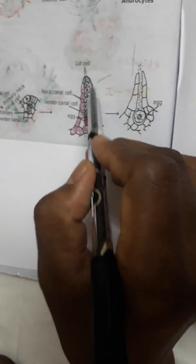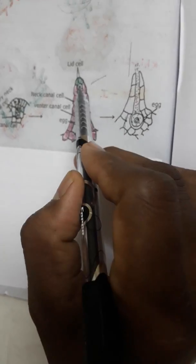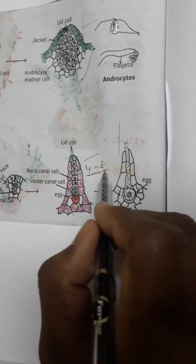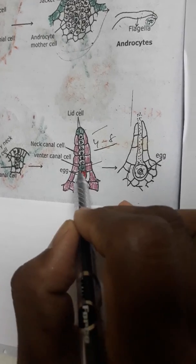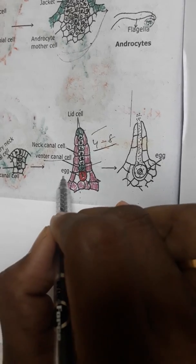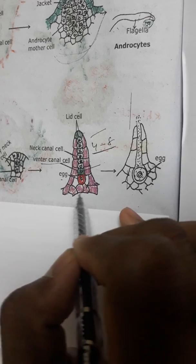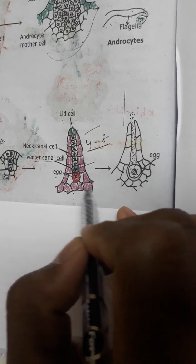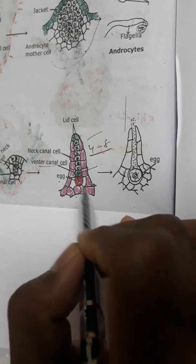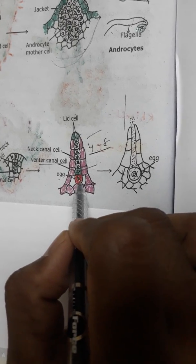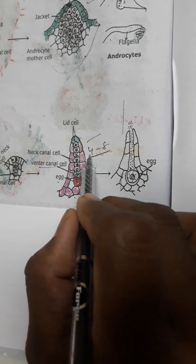The archegonium has jacket. It is the neck, neck jacket. These are the neck canal cells. Nearly four to eight neck canal cells are present. Remember, four to eight neck canal cells, four lid cells, one ventral canal cell, one egg cell. Here, no venter. The entire venter is almost embedded into gametophytic tissue. It is egg cell, big in size. The number of neck canal cells are four to eight.